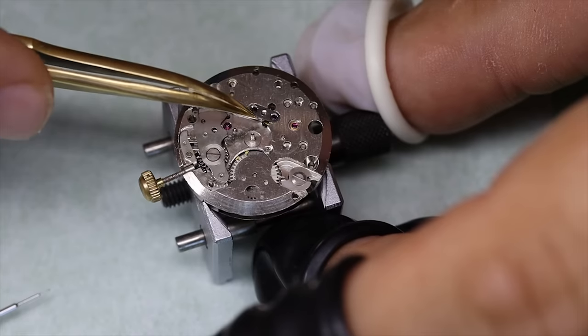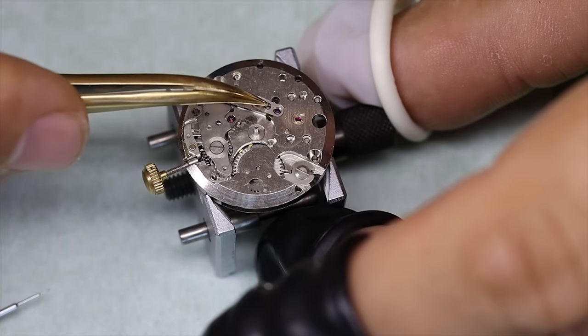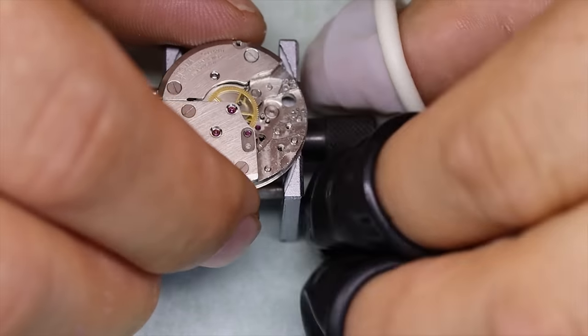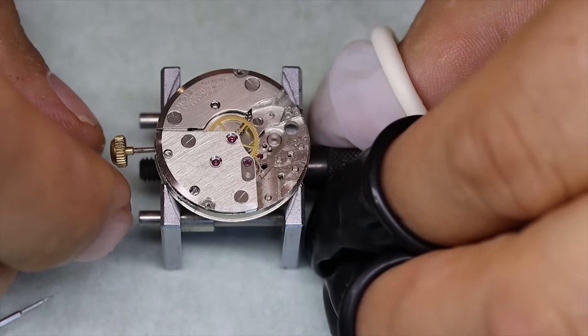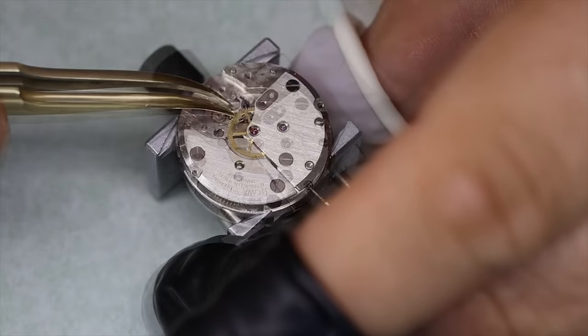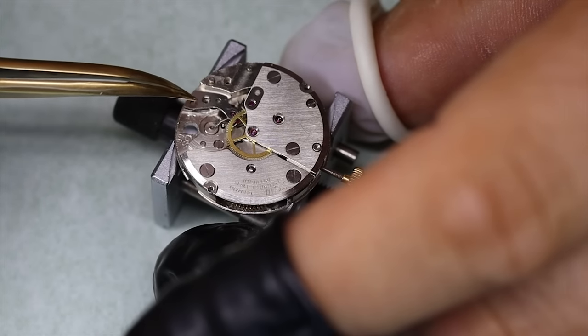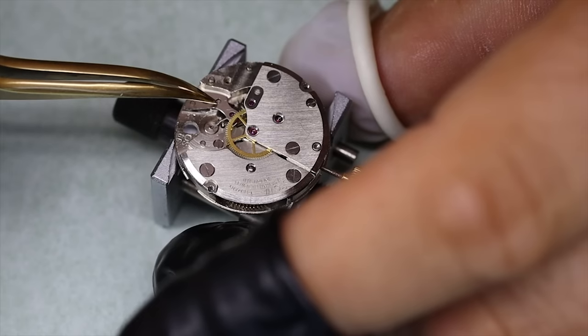This little combined plate for end stones is quite interesting. One is for the escape wheel and the other for the pallet fork. Of course, we do not oil the pallet fork. But we need to have that end stone in there before we can put the pallet fork back in.